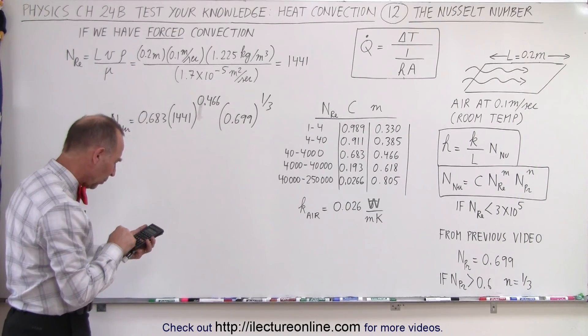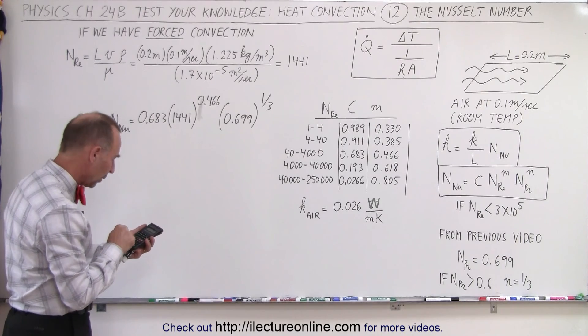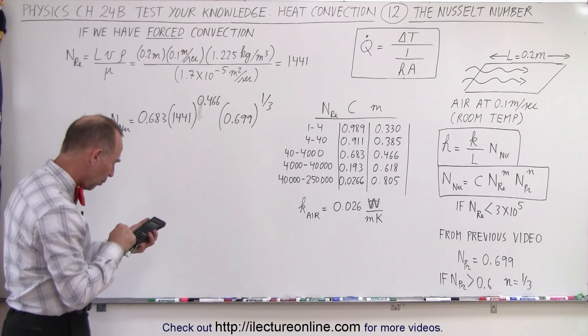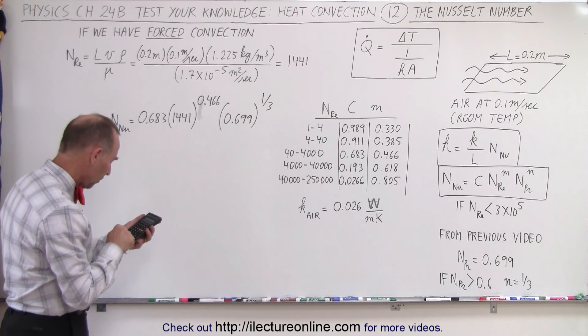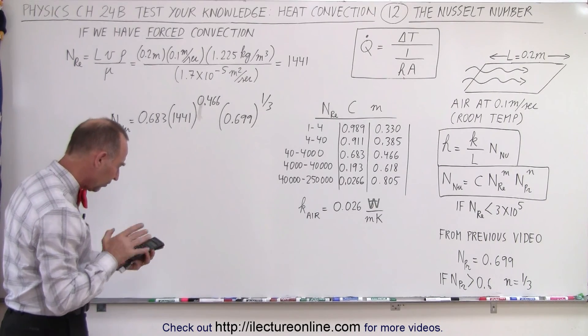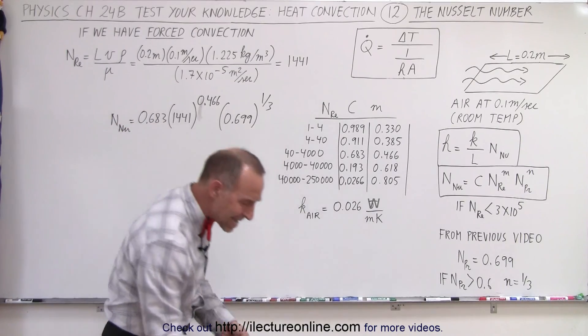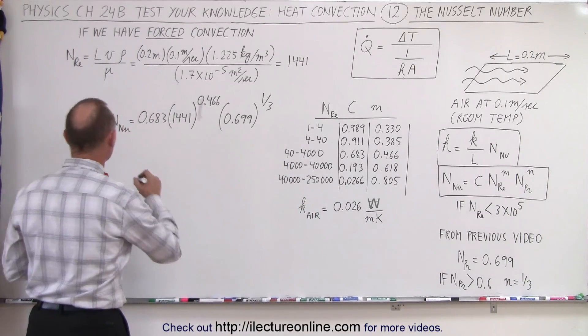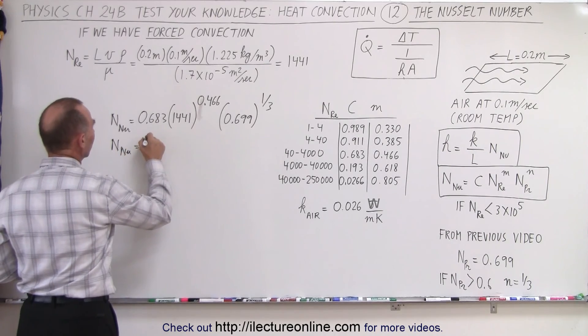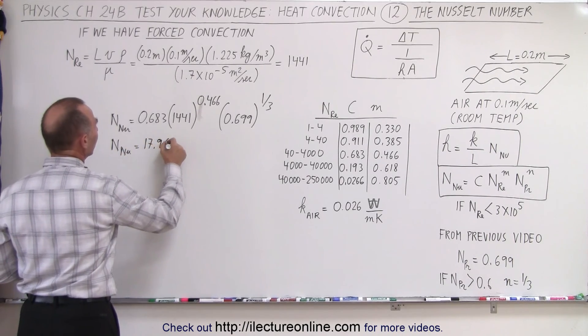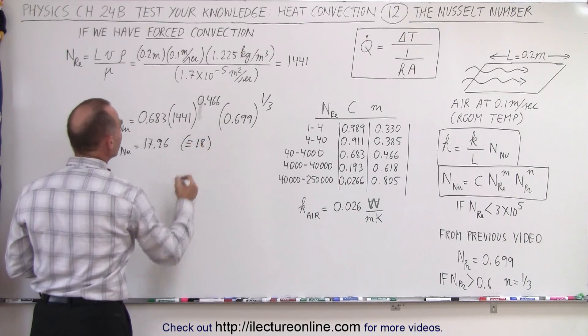Multiply that times 1,441 raised to the 0.466 power. And then we multiply that times 0.683, and we have about 18, 17.96. So the Nusselt number is equal to 17.96, which is about equal to 18.